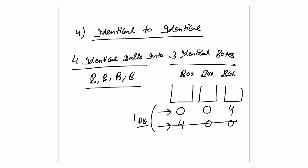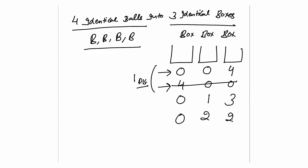The cases are: 0, 0, 4 (one box has 4 balls, two are empty); then 1, 3, 0 (one box has 1 ball, another has 3 balls, one is empty); then 0, 2, 2 (one empty box, two boxes have 2 balls each); then 1, 1, 2 (one box has 1 ball, another has 1 ball, last has 2 balls). These are the only 4 ways to distribute 4 identical balls into 3 identical boxes.